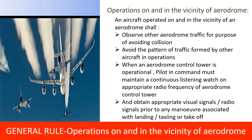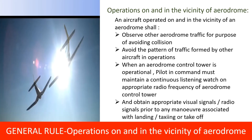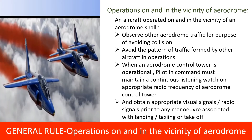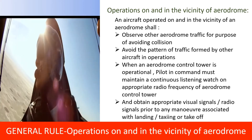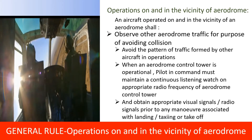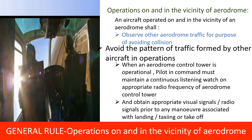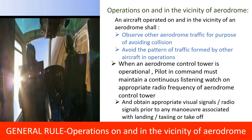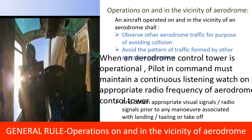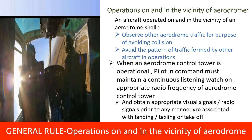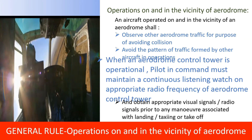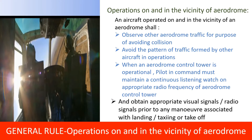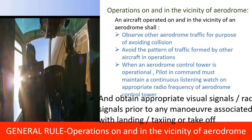Rules for aircraft operating on and in the vicinity of an aerodrome: an aircraft shall observe other aerodrome traffic for the purpose of avoiding collision, and avoid the pattern of traffic formed by other aircraft in operation. When an aerodrome control tower is operational, the pilot in command must maintain a continuous listening watch on the appropriate radio frequency of the aerodrome control tower and obtain appropriate visual and radio signals prior to any manoeuvre associated with landing, taxiing or take-off.